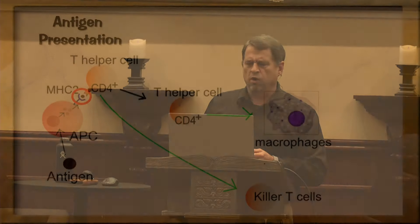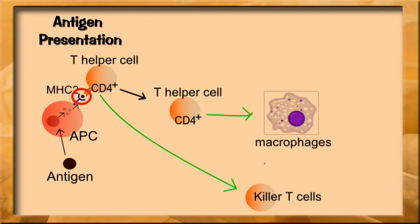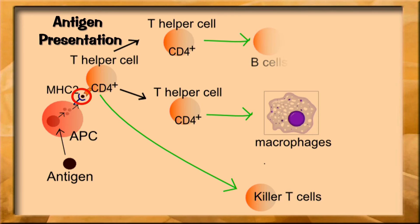For example, maybe it's a cancer cell — one of your own cells — and if so, killer T cells are activated to go out and kill those. Or maybe it's a bacteria or virus, and macrophages — the big eaters — are activated to go eat those things. Or B cells are activated to make antibodies.